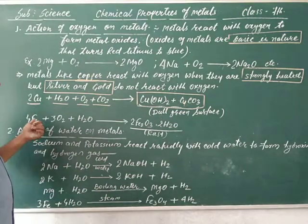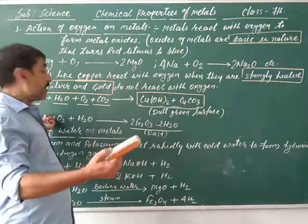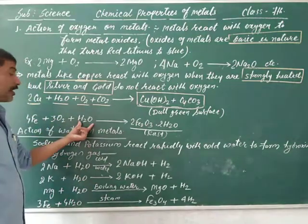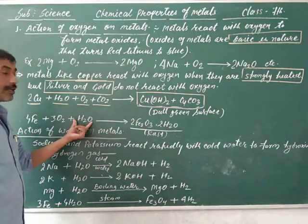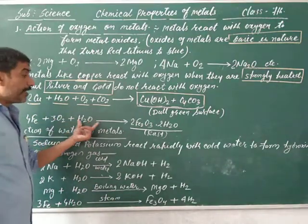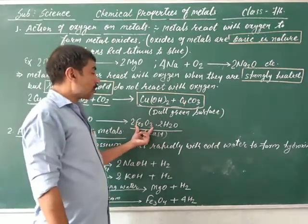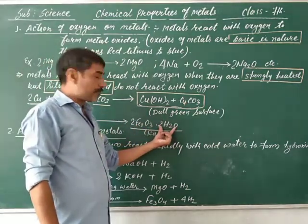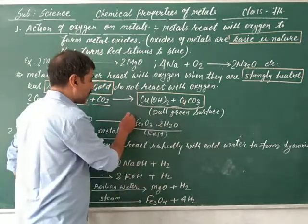Next, iron. When iron comes in contact with moisture — meaning oxygen and water — the iron reacts with oxygen and water and converts to iron oxide combined with water molecules. This is called rust.